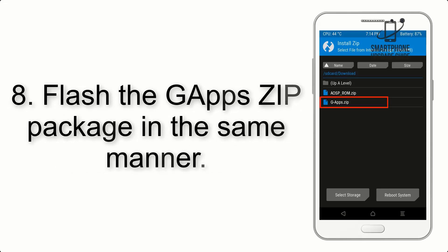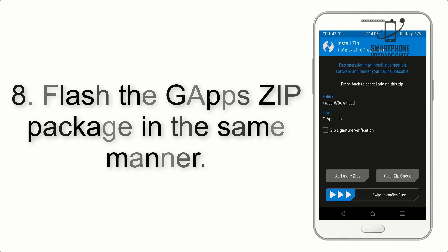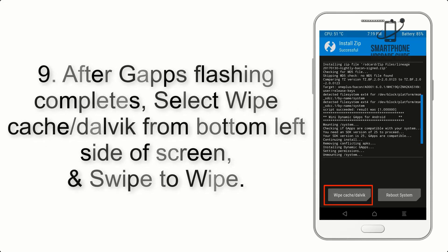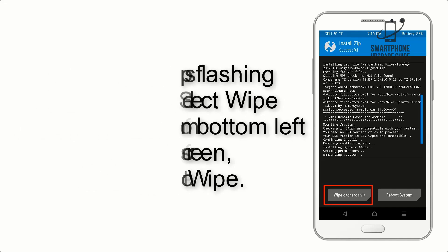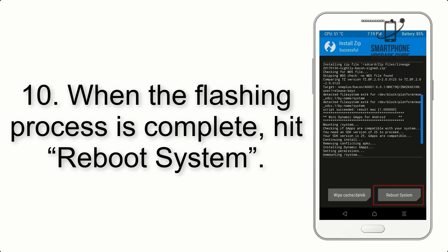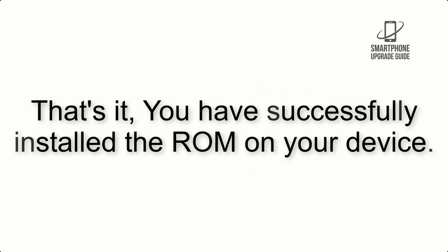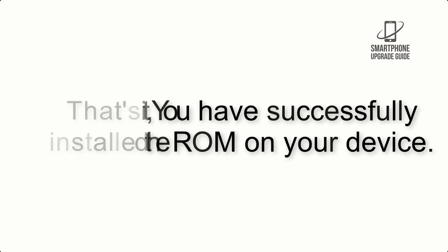Step 8: Flash the GApps zip package in the same manner. Step 9: After GApps flashing completes, select Wipe Cache and Dalvik from the bottom left side of the screen and swipe to wipe. Step 10: When the flashing process is complete, hit Reboot System. That's it — you have successfully installed the ROM on your device.